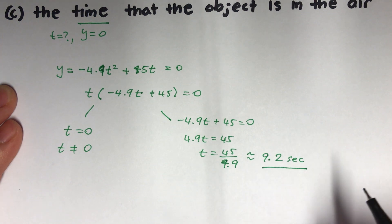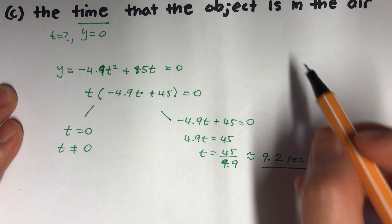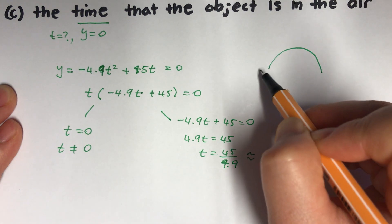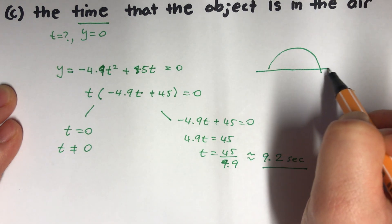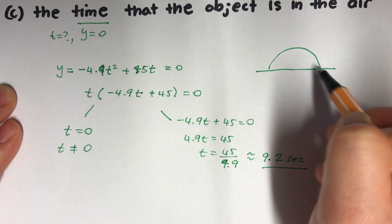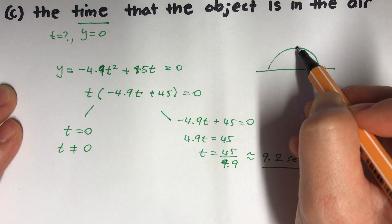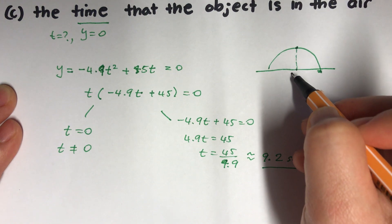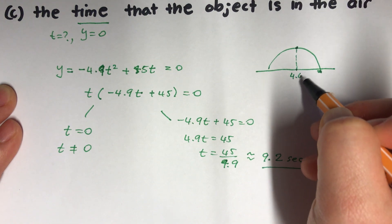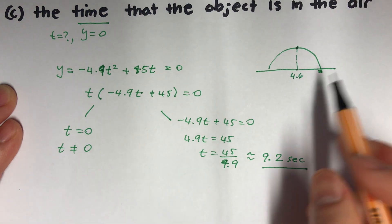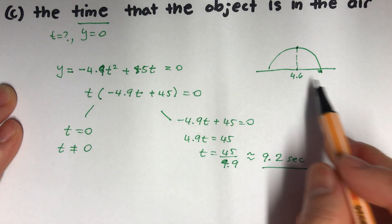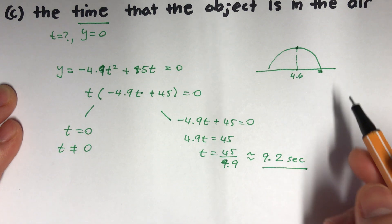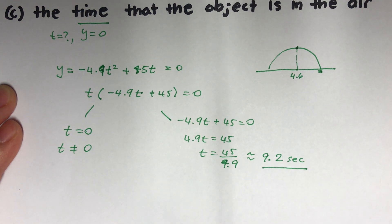Alternatively, since the motion is symmetric, we know the object hits the maximum height at t equals 4.6 seconds from part a. So we can simply double it to get the total time of flight: 4.6 times 2 equals 9.2 seconds — the same answer.